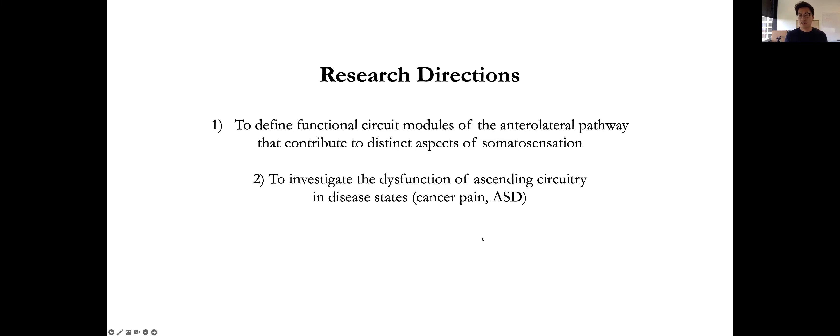The second direction is to investigate the dysfunction of the ascending circuitry in disease states, such as cancer pain and autism. Touch and pain sensitivity is known to be altered in these disease states. Considering that spinal projection neurons are somatosensory gateways to the brain, and the gating of their activities need to be tightly controlled to maintain normal touch and pain sensation, I think these ascending pathways can be good potential therapeutic targets for treating disorders associated with touch and pain.